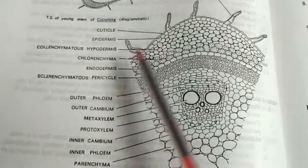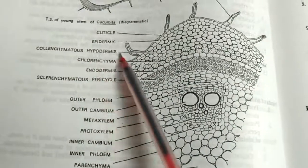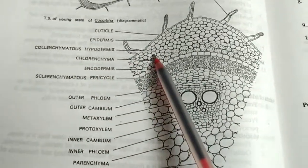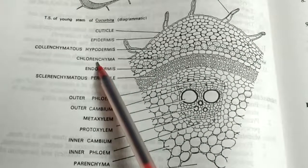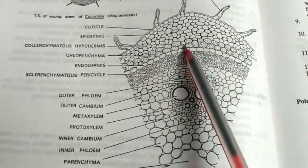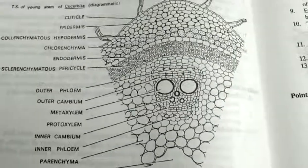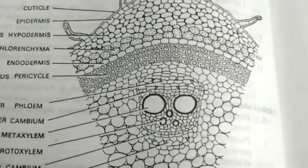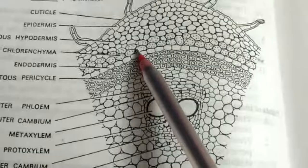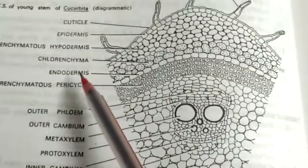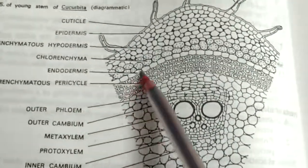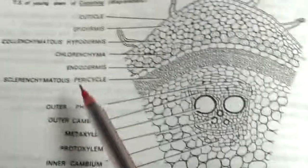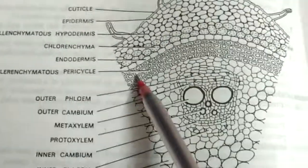Endodermis, collenchymatous hypodermis. These are chlorenchyma cells having chloroplast - as you can see these are chloroplasts. Endodermis having starch grains. Sclerenchymatous pericycle is present.